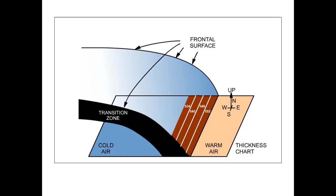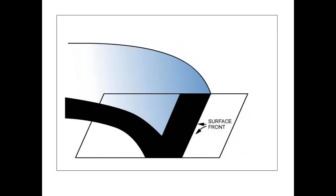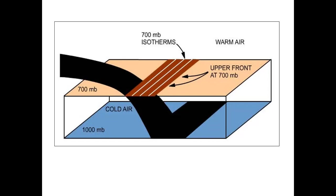This image shows the frontal surface location and you notice how it slopes up above the ground. Where it meets the ground, that's where your surface front is going to be. There's going to be a transition zone as you go from the surface aloft through a frontal surface. In addition to surface fronts, there are also upper level fronts. In this example, we show an upper front at about 700 millibars, which is about 10,000 feet above the ground.